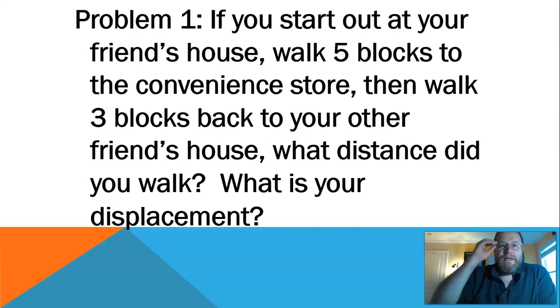Hopefully you're back. If you walk five blocks, then you walk three more blocks, five plus three is eight. So your distance is eight blocks. What's your displacement? You started off at your friend's house, ended up at the other friend's house. Those two are two blocks apart. Displacement also has direction to it. So you started at friend's house, ended up at other friend's house. That's a displacement of two blocks to the right.